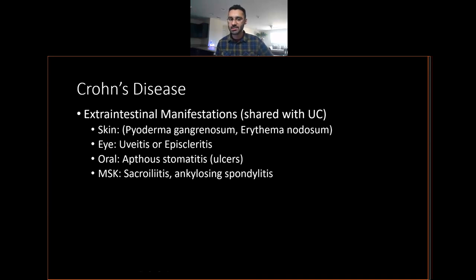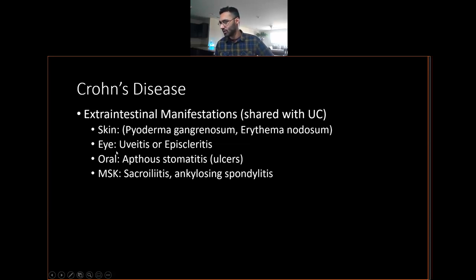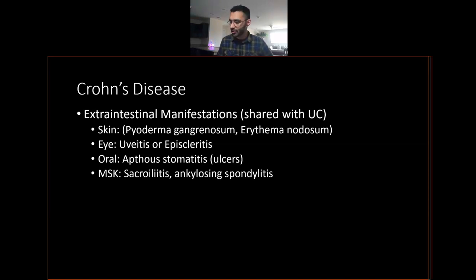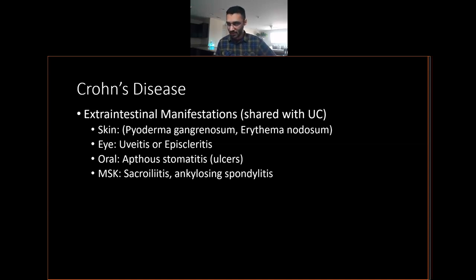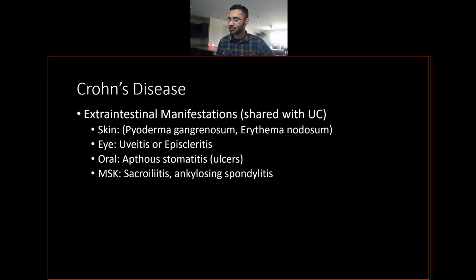Extra-intestinal manifestations of Crohn's disease — shared with ulcerative colitis — include skin involvement: pyoderma gangrenosum and erythema nodosum. To answer the question: yes, Crohn's can affect the entire GI tract, so fissures and strictures can occur higher up in the upper GI tract as well, though they're more common in the lower GI tract. Eye involvement includes uveitis — incredibly dangerous, acute process — and episcleritis. Mouth ulcers (aphthous ulcers) are very common with both Crohn's and ulcerative colitis. Musculoskeletal involvement includes ankylosing spondylitis and sacroiliitis.